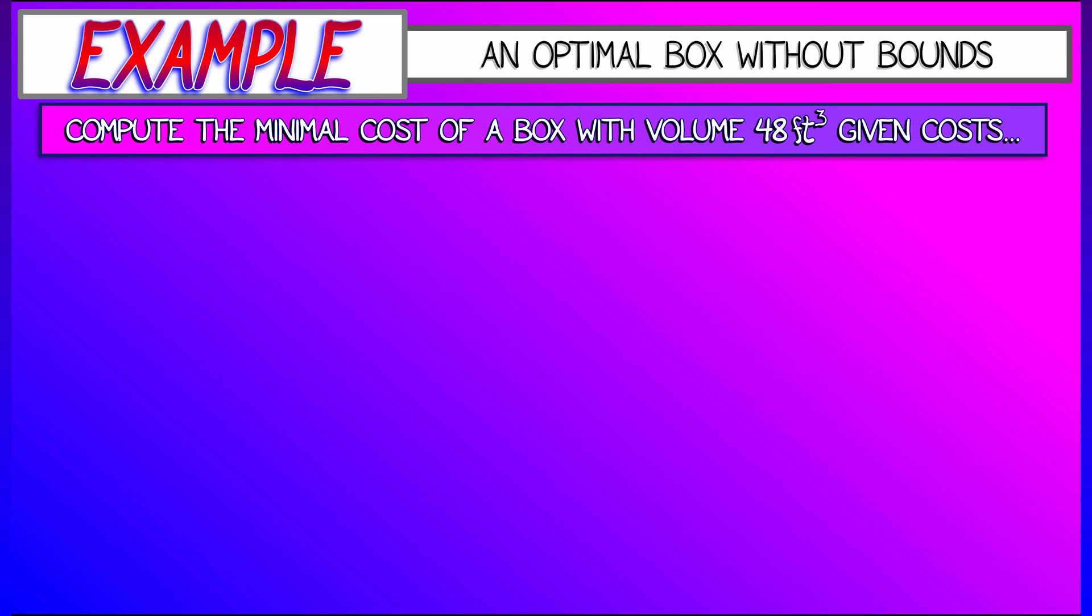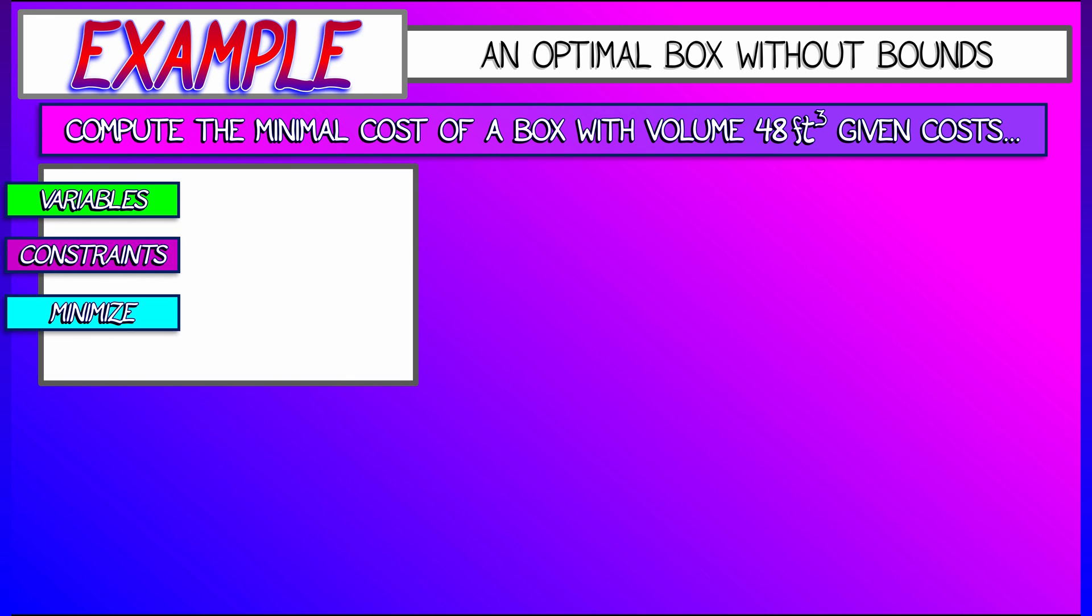Simple example, you got a box, it has a volume of 48 cubic feet, and you want to minimize a certain cost. Let's say the dimensions of this box are given by variables X, Y, and Z, and the constraints are that their product has to be 48, and these dimensions have to be non-negative.